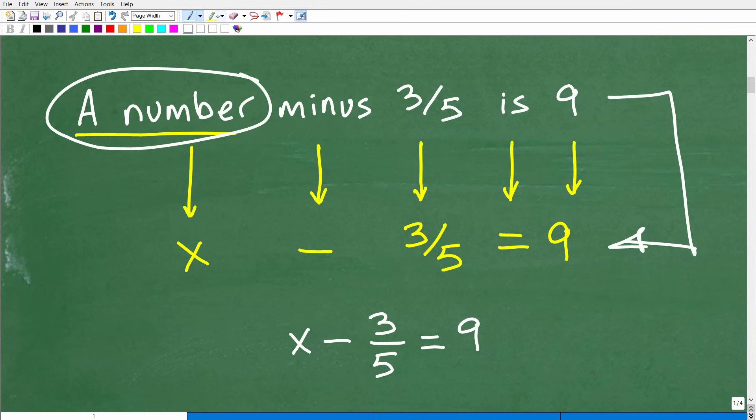So we're just going to go through and just translate word by word this verbal phrase into an algebraic equation. So a number, we're going to put x minus. Well, that's pretty easy. That means the minus sign. We're talking about subtraction here. So a number minus, what, three-fifths? Well, we'll put three-fifths. So we've got a number, some number, minus three-fifths is.